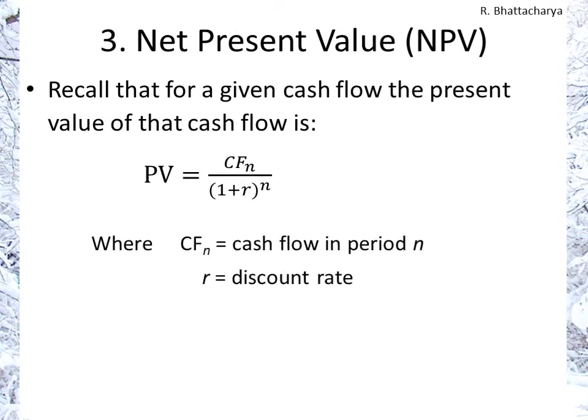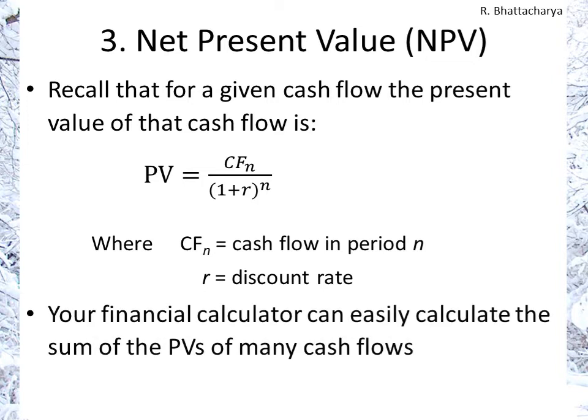The present value calculation is simply the discounted rate applied to each cash flow. We do this for each cash flow and add them together, including the initial cash outflow, to calculate the net present value. The good news is that your calculator can easily make these calculations — just enter the cash flows, enter the discount rate, and the calculator gives you your answer.